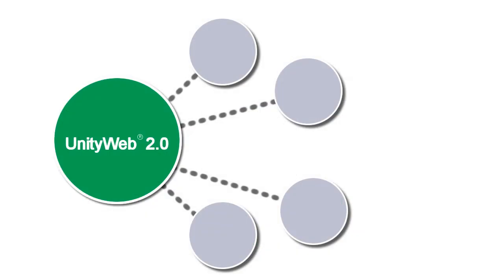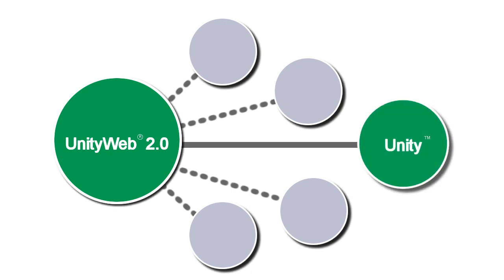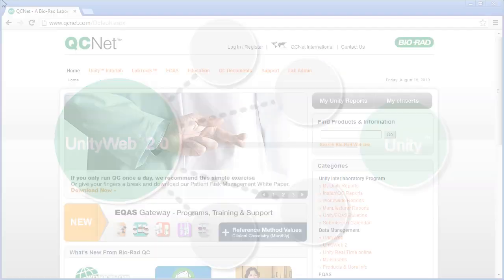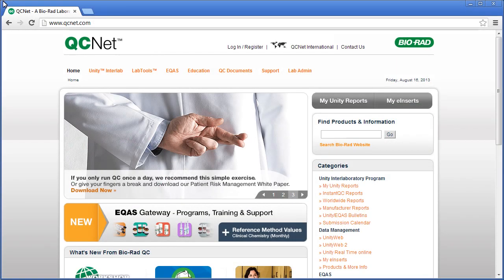Unity Web 2.0 offers many features. We'll cover several of them in this training. One of the most powerful features is the ability to connect your laboratory to the Unity Interlaboratory program, which allows you to access peer group reports. Let's get started with a brief orientation.